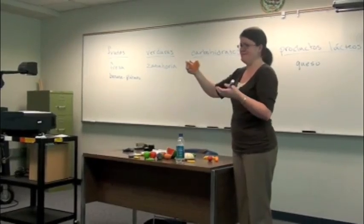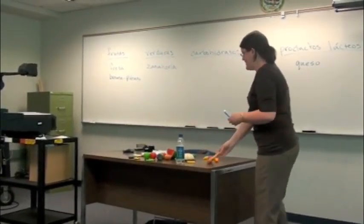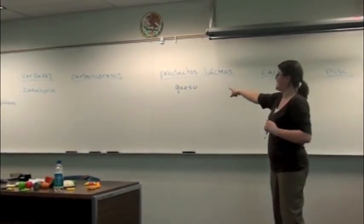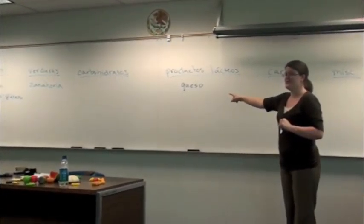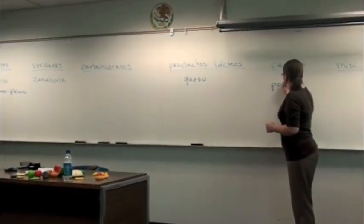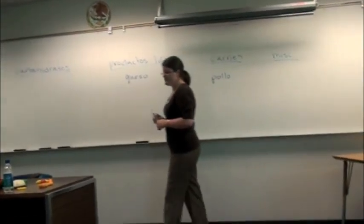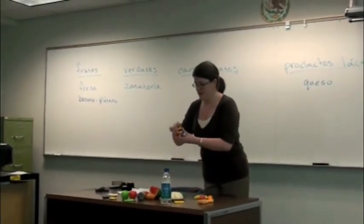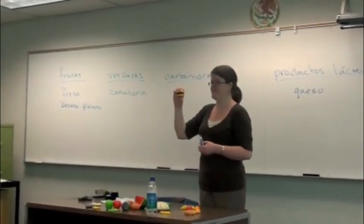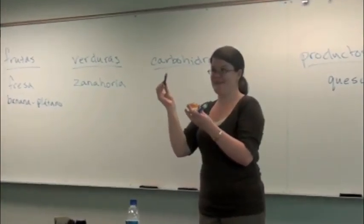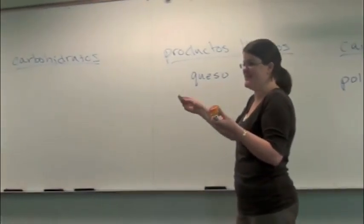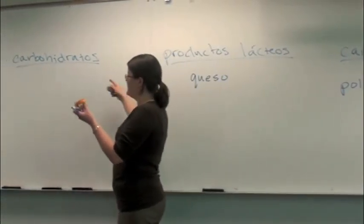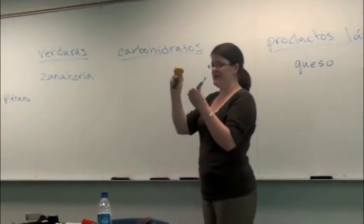Pero como es de plástico... Bueno, es pollo, ¿sí? Y el pollo es... ¿Un producto lácteo como el queso? No, es carne, ¿sí? El pollo. ¿Qué más? ¿Hamburguesa? Sí. Esta parte de la hamburguesa es carne, ¿sí? La hamburguesa — la carne molida. ¿Y esta parte?